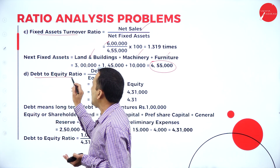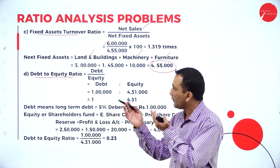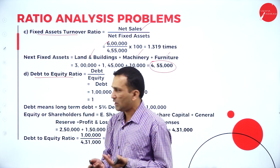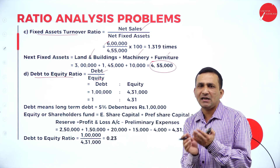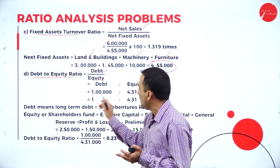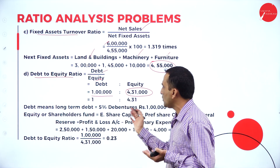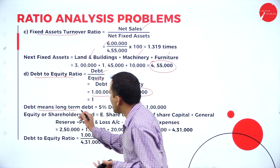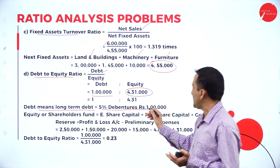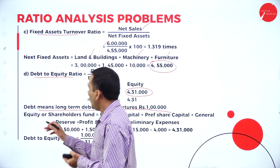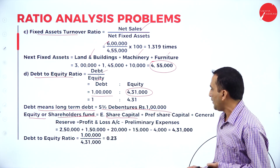Moving to the debt-equity ratio. Debt is your long-term loan; equity is the shareholders' part. Debt divided by equity. Debt on the liability side of the balance sheet is clearly specified as 1 lakh — the 5% debenture.